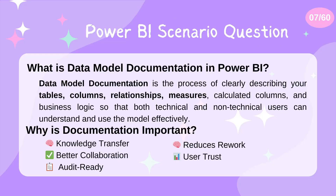Data model documentation is basically a process where you clearly describe your tables — what tables are used, what columns you use, how your relationships are set up, what measures you use, what calculated columns you have, and any business logic you have added — so that both technical and non-technical users can easily understand and effectively use your model.